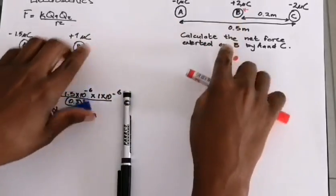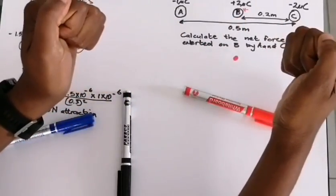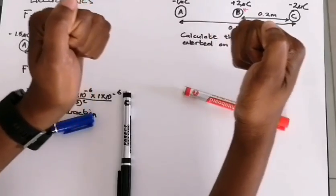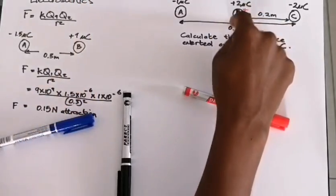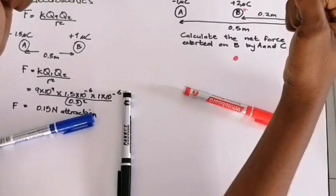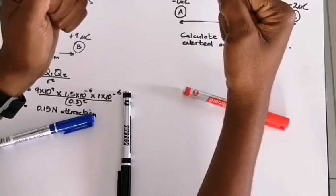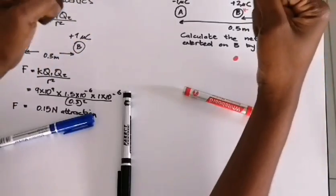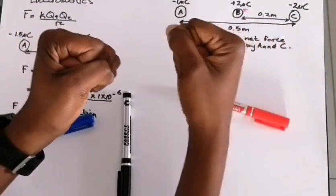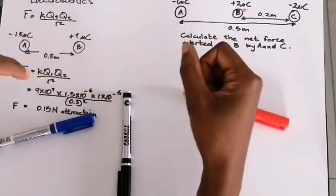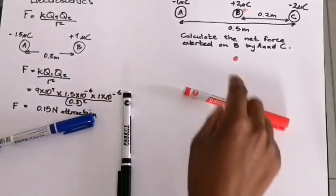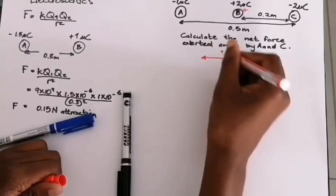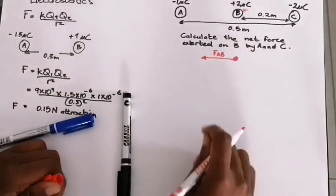A is a negative charge and B is positive, so the force between them is a force of attraction — unlike charges attract. When there's attraction, they pull each other closer. Focusing on B: as A and B attract, B would be pulled towards the west. So the force that A exerts on B is directed towards the west.